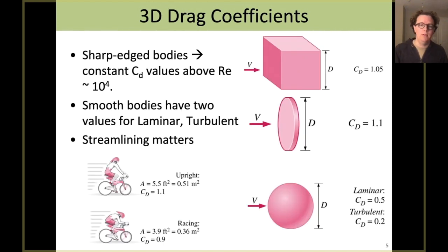These also tend to play out in 3D. So for sharp edged bodies, bodies that do not have rounded edges but instead have sharp edge points, that tends to cause a characteristic separation of the boundary layer. And so those will be approximately constant once you get above a Reynolds number of about 10,000.